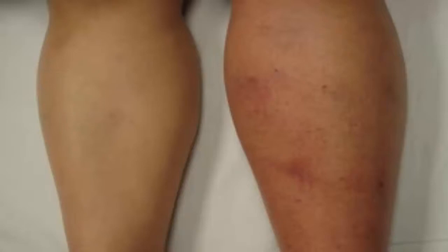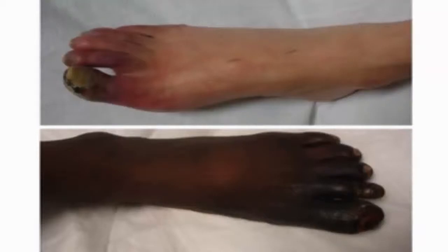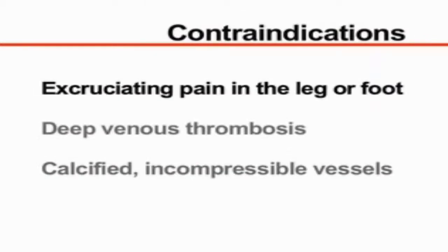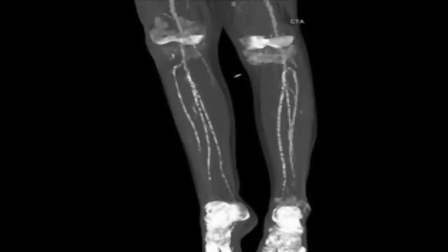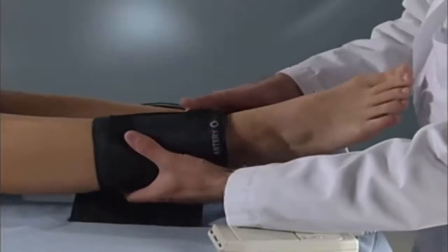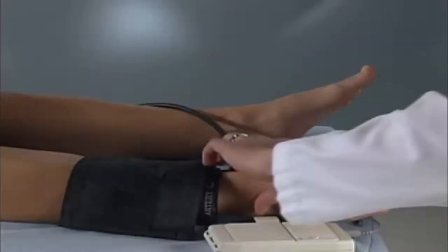Although there are no absolute contraindications for measuring the ankle brachial index, the presence of excruciating pain in the leg or foot may deter the physician from performing this procedure. If the patient has known deep venous thrombosis, this procedure may dislodge the clot, which could then embolize. If the vessels to be examined are calcified and thus incompressible, as in elderly patients or those with long-standing diabetes or with dialysis-dependent renal failure, the ankle blood pressure readings may be affected. However, these conditions are not absolute contraindications to measuring the ankle brachial index.